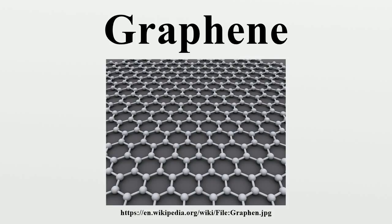Graphene can be considered an infinite alternate polycyclic aromatic hydrocarbon. The IUPAC compendium of technology states that previously, descriptions such as graphite layers, carbon layers, or carbon sheets have been used for the term graphene. It is incorrect to use for a single layer a term which includes the term graphite, which would imply a three-dimensional structure. The term graphene should be used only when the reactions, structural relations or other properties of individual layers are discussed.